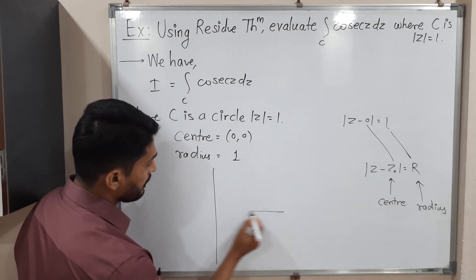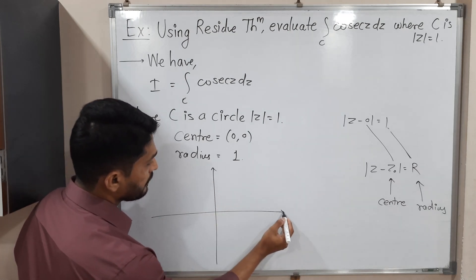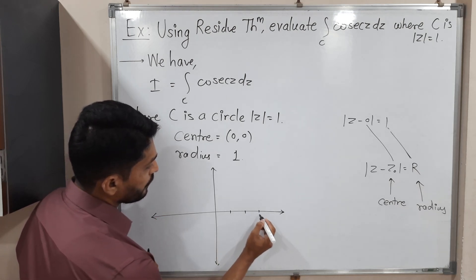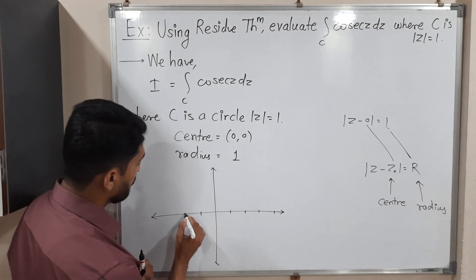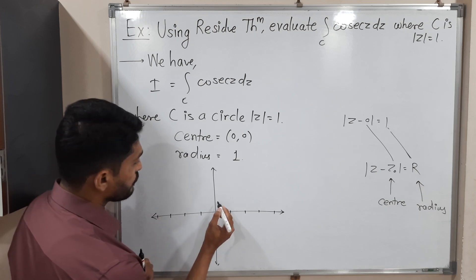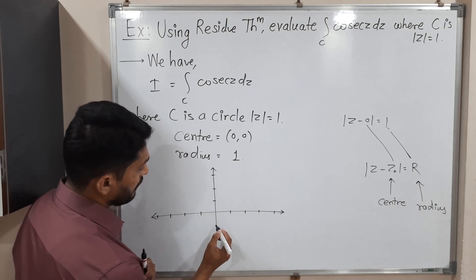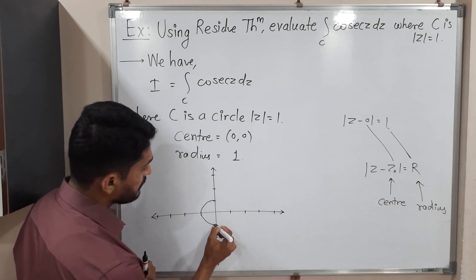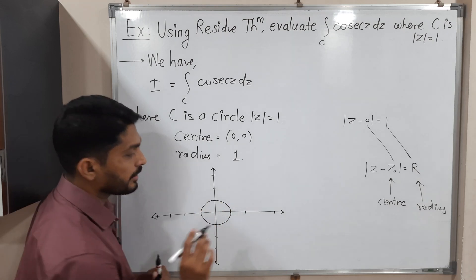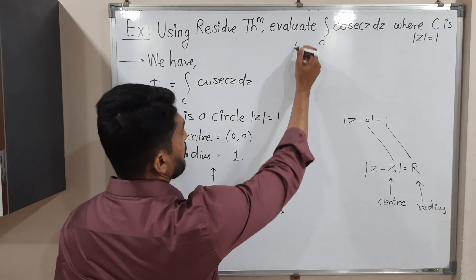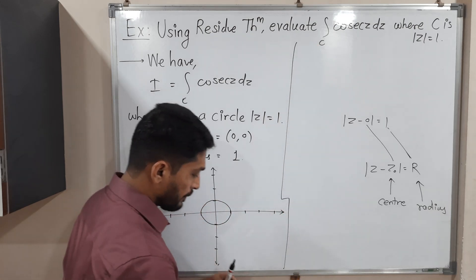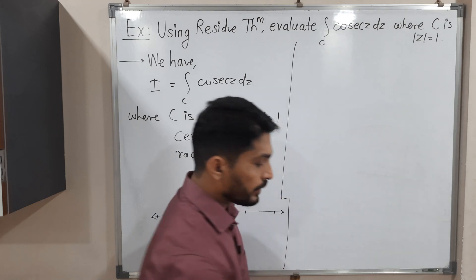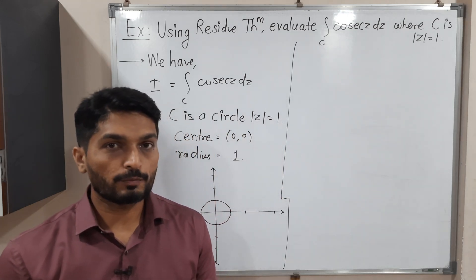Let us draw this circle. We have the imaginary axis and the real axis. Marking units from −4 to 4 on both axes, we draw the circle centered at the origin with radius 1.